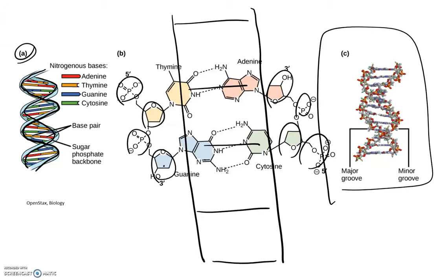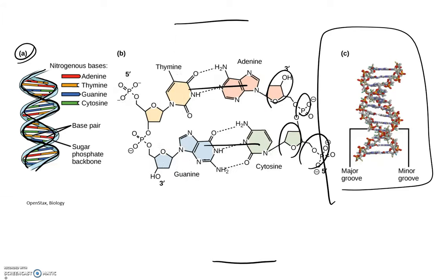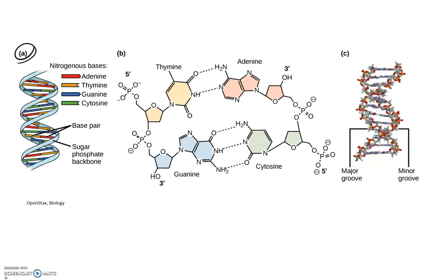Now, what I want you to also think about when you're thinking about the structure of DNA is that the way it is represented here is the way it exists typically in the cell, which that is double-stranded. The two strands are held together by the hydrogen bonding of the bases.